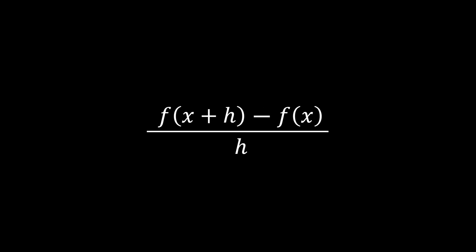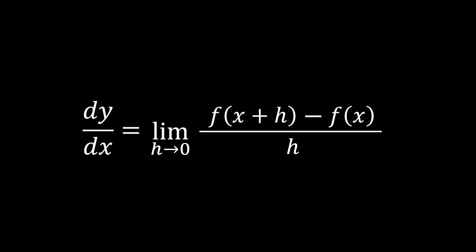However, setting h to 0 would cause division by 0, which we cannot do. To resolve this, we use the concept of a limit, written as the limit as h tends to 0. This allows us to calculate the gradient without breaking mathematical laws. This is the definition of differentiation, often called differentiation from first principles.